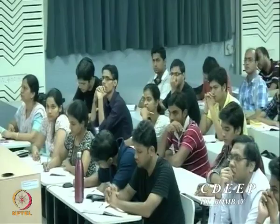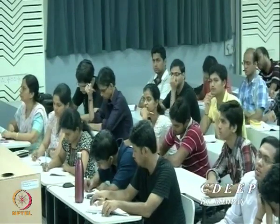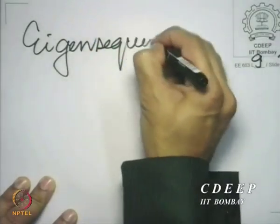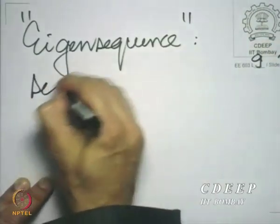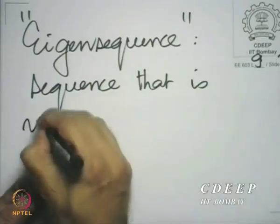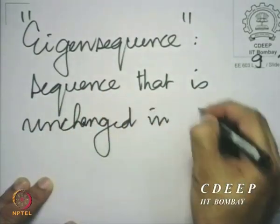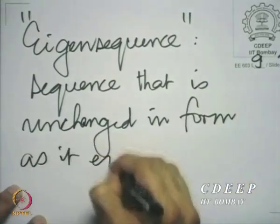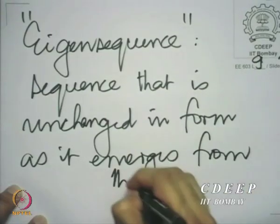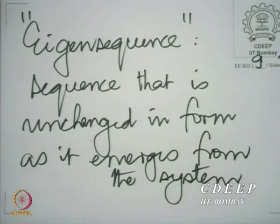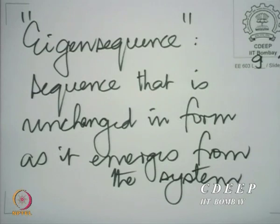Such a sequence which goes into a system and emerges as the same sequence but multiplied by a constant is called an eigensequence of the system. The sequence goes in and is unchanged in form as it emerges. It is like saying that the action of the LSI system is decoupled for each of these sequences.